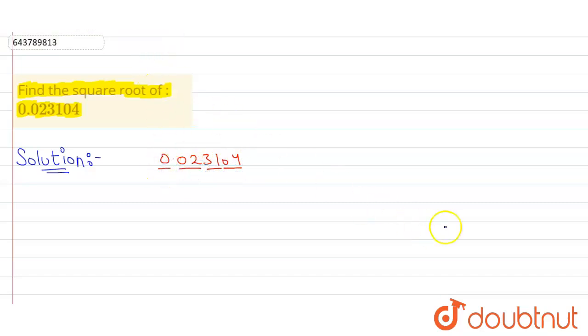square root by long division method. 0.023104. Now first digit is 0, so 0 into 0 is 0. I'll subtract this, we'll get 0. I'll take this